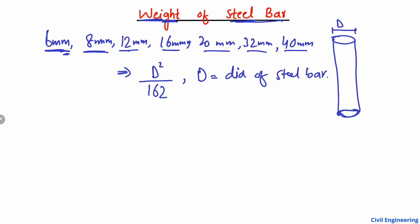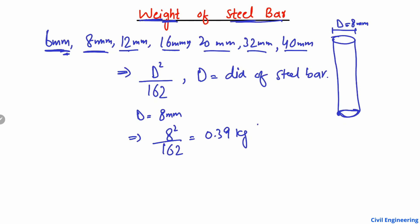For example, we are going to calculate for D equal to 8 millimeter steel bar. We just plug the value into the formula: 8 squared divided by 162, and we get 0.39 kg. So this is per meter — for 1 meter length, we have a weight of 0.39 kg.